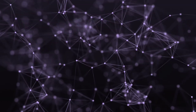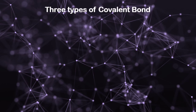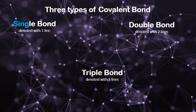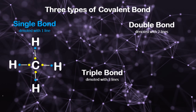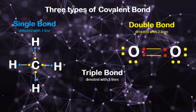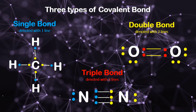There are 3 types of covalent bond, depending on the number of shared electrons: single bond, double bond, and triple bond. Single bond denotes 1 bond or 1 line between atoms, just like the bond between carbon and hydrogen. Double bond denotes 2 lines between atoms, just like the bond between 2 oxygen atoms. Triple bond denotes 3 lines between atoms — for example, the bond between 2 nitrogen atoms. Nitrogen has 5 valence electrons and needs 3 more to become stable. Nitrogen will share 3 electrons with another nitrogen atom to become stable.